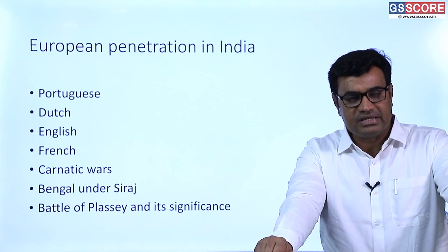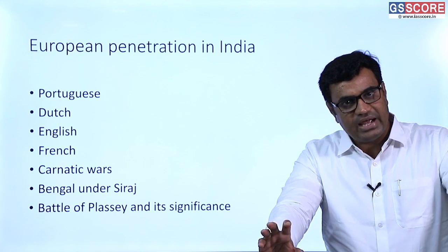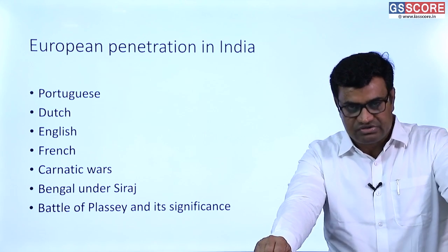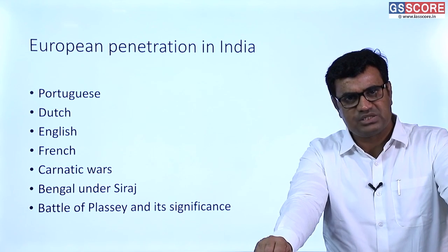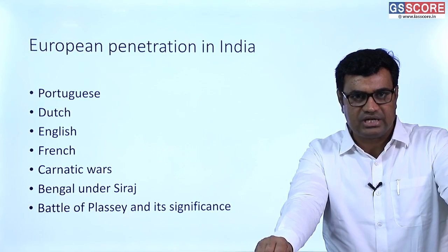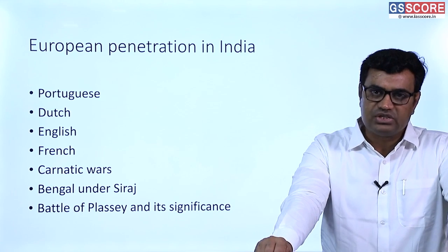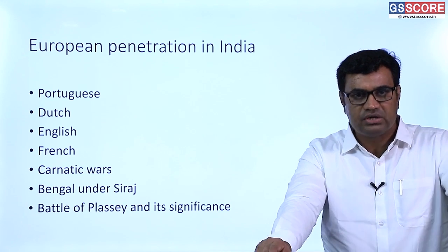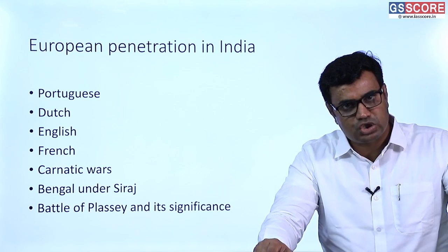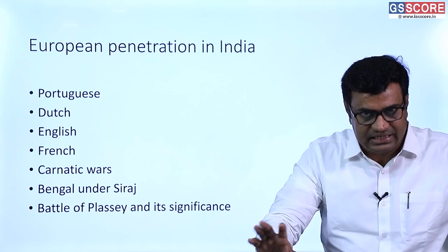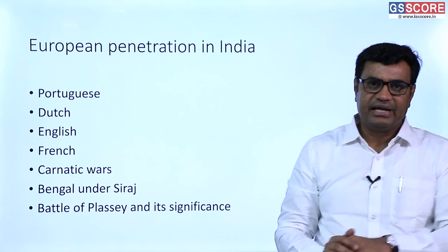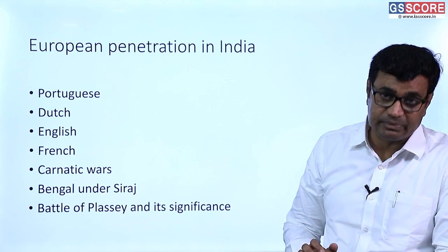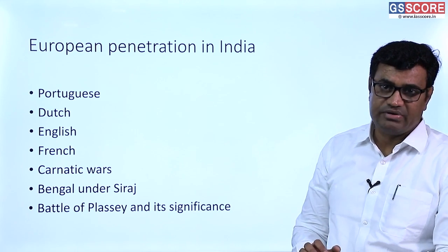The English were followed by French traders who came to India in the second half of the 17th century. Both British and French wanted to dominate Indian territory and trade, and they began to fight among themselves. This resulted in three decisive battles between the British and the French, known as the Carnatic Wars, fought in the region of Carnatic in southern India. Ultimately in these Carnatic Wars, the French were defeated and the English emerged victorious in trade with Indian territory.